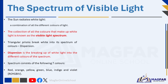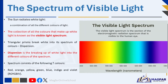The sun radiates white light. White light is actually a combination of all the different colors of light, which you can see separately in the bands of a rainbow. The collection of all the colors found in a rainbow is called the spectrum of visible light. When we see a rainbow, we see the different colors that white light is made up of in bands. The collection of all the colors that make up white light is known as the visible light spectrum.